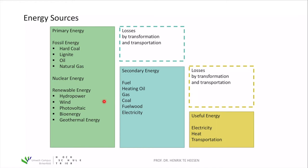The primary energy sources used to fulfill useful energy demand include fossil sources: hard coal, lignite or brown coal, oil, and natural gas — the big four fossil energy sources. Then there is nuclear energy using uranium in nuclear power plants to generate electricity. Finally, the growing group of renewable energy sources includes hydropower, wind, photovoltaics, bioenergy, and geothermal energy. The first four are based on the sun.